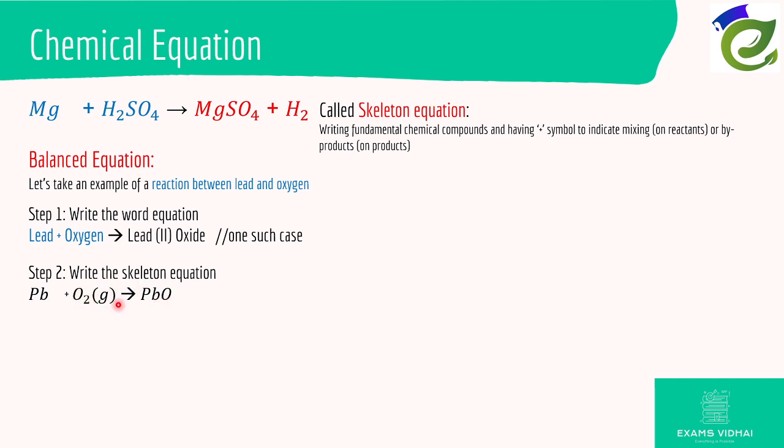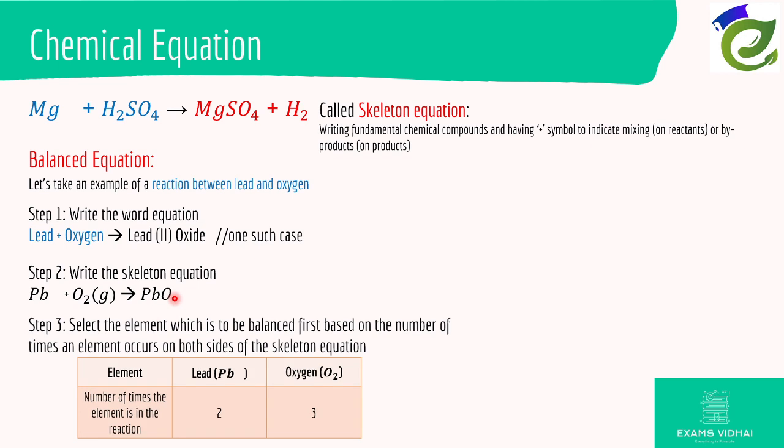Notice that the amount of oxygen here is higher than here, it has two here and one here. Our goal is to make the equation balanced. Step three is write the number of times the element has occurred on both sides. You have one lead here and another lead here which means two, and then you have two oxygen here and one oxygen here which means three. Write this table and compare which element is lower or higher.